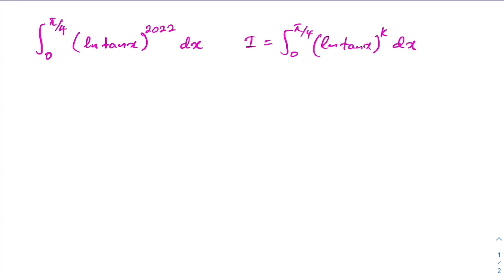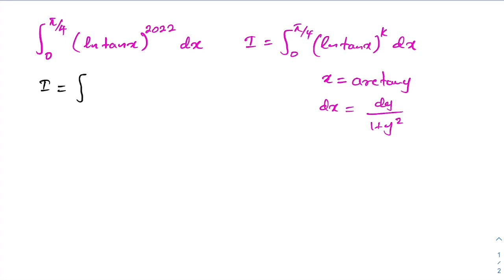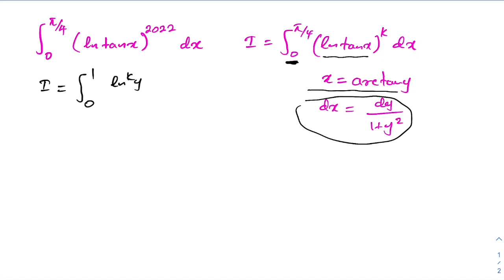As a next step I am going to use a substitution: x = arctan(y). Differentiating gives dx = dy / (1 + y²). Now we can plug in and change the boundaries. When x approaches 0, arctan(0) = 0; when x approaches π/4, arctan(1) = 1. Since tan(x) = y, we have the natural log of y raised to the k power, times dy / (1 + y²).